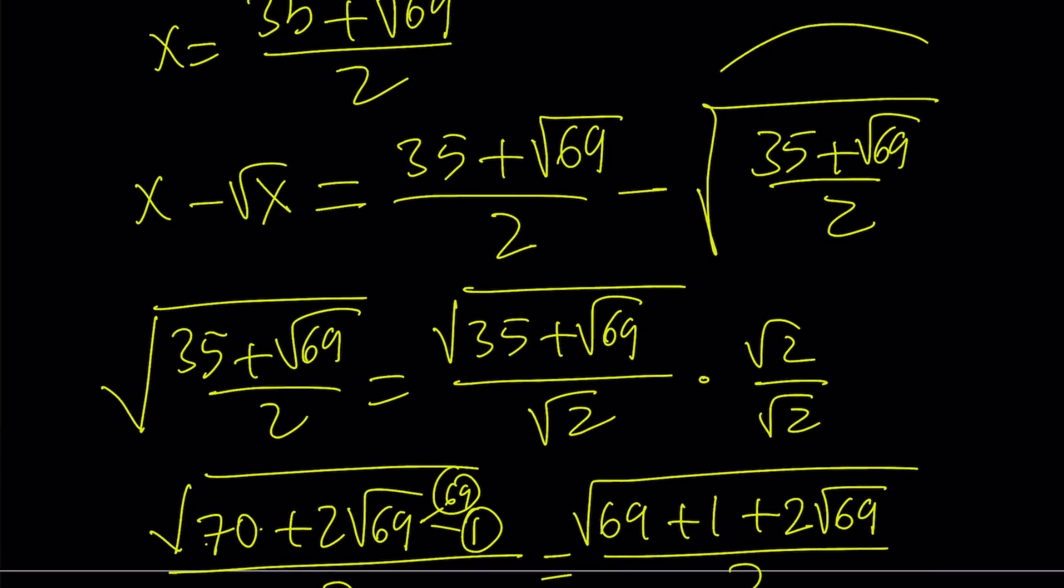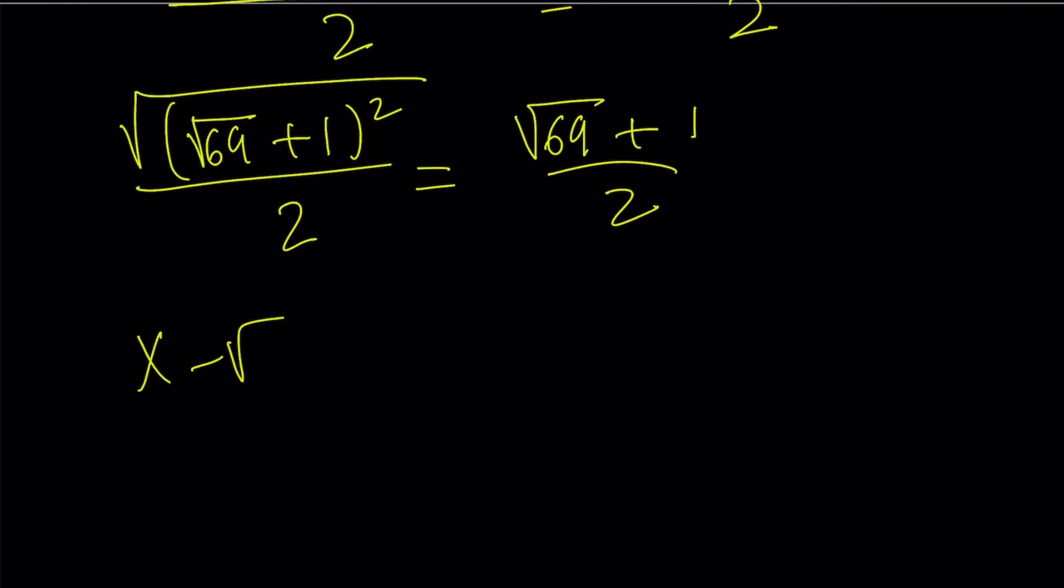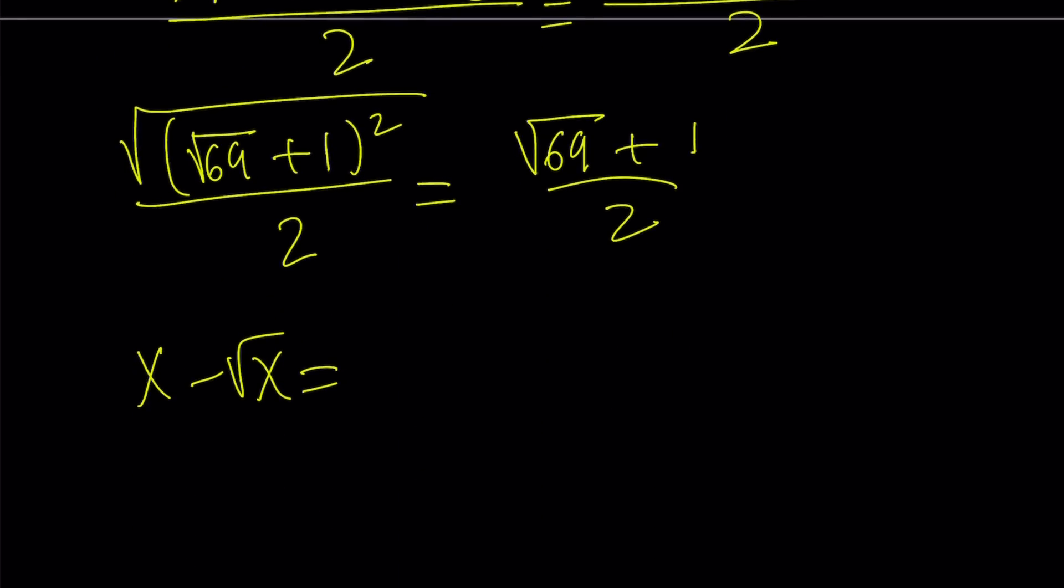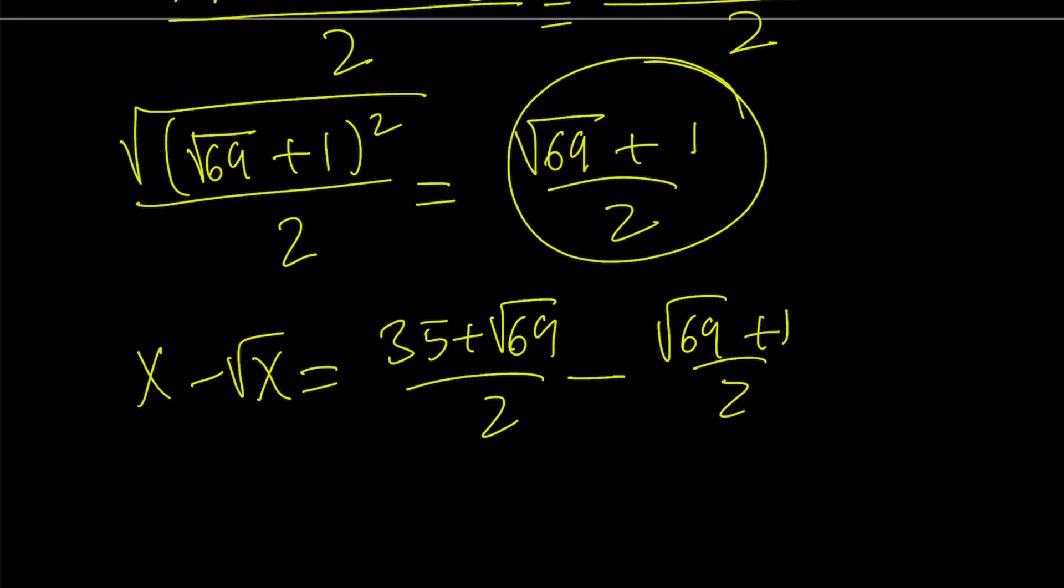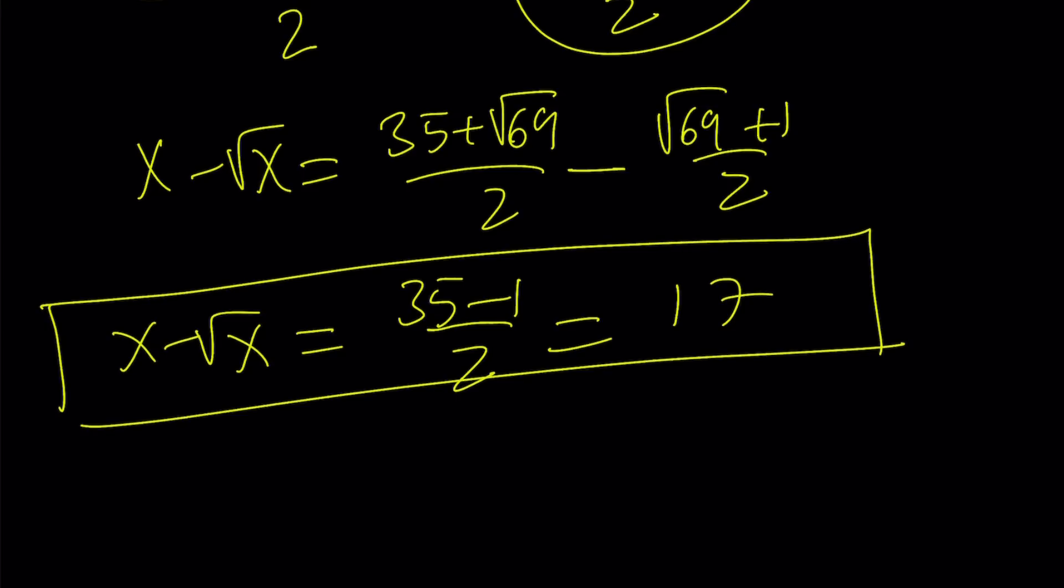Now, remember, that's just part of the expression. So I'm going to go ahead and plug it in here to find x minus square root of x. x is equal to 35 plus square root of 69 over 2 minus the square root of x is equal to square root of 69 plus 1 over 2. They have a common denominator, so the answer becomes 35 minus 1 over 2, which is 34 over 2. And that is equal to 17. So my expression for the only x value that works is going to equal 17.